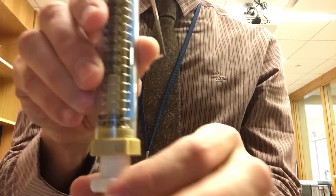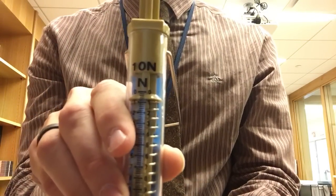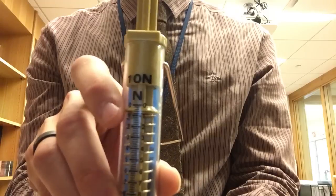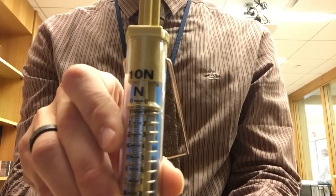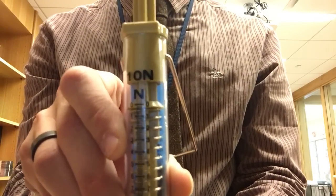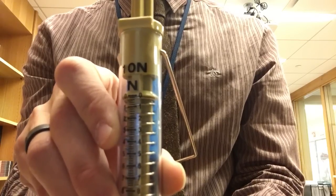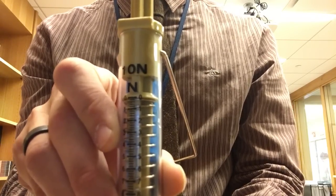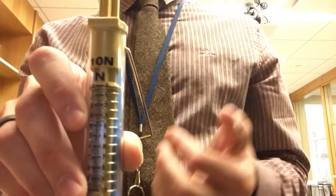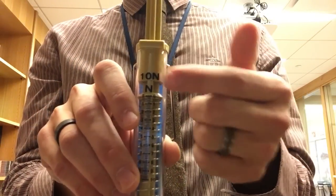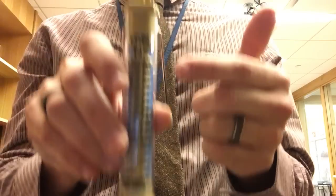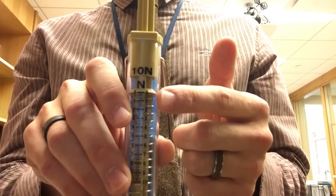This knob, if you turn it, will change where it reads. You can see this thing right here is moving up. So it'll change where it reads so that when nothing is pulling on it, it does actually say 0. You need to do this before you make any measurement. Check that when nothing is pulling on it, it does actually equal 0.